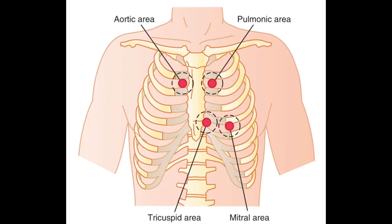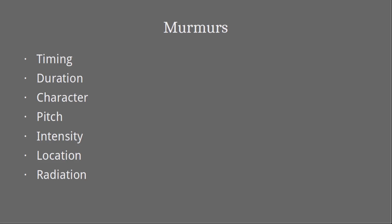Now let's move to the auscultation areas of the heart, where the sound from each valve is best heard. The aortic area lies at the second intercostal space to the right of the sternum. The pulmonary area lies at the second intercostal space to the left of the sternum. The tricuspid area lies at the fifth intercostal space to the left of the sternum. The mitral area lies at the cardiac apex, just medial to the midclavicular line in the fifth intercostal space. There is also Erb's point, at the third intercostal space to the left of the sternum. The headings under which murmurs are described include timing, duration, character, pitch, intensity, location, and radiation.